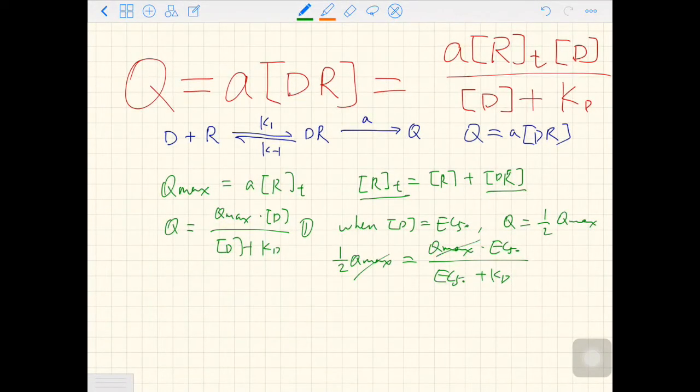Q max and Q max cancel out. So you have one half equals EC50 over EC50 plus KD. If you simplify this, you will have EC50 equals KD.